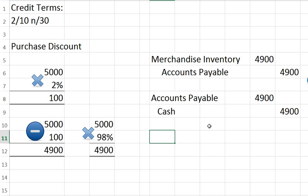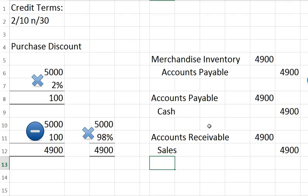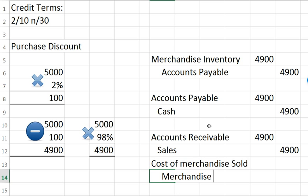If we are selling something and we offer a discount, we also just show it at the net amount. We would have accounts receivable for $4,900 and show sales of $4,900. Because we are using the perpetual method of inventory, we also need to show that some inventory went out — so we debit cost of merchandise sold and credit merchandise inventory. This shows that inventory has left our store, and we are matching that expense into the same period as the sale, which is the matching principle.